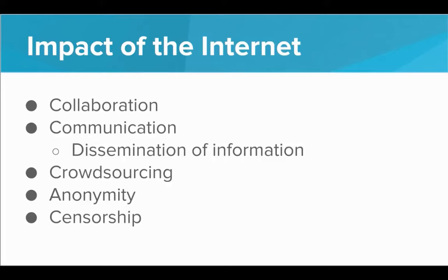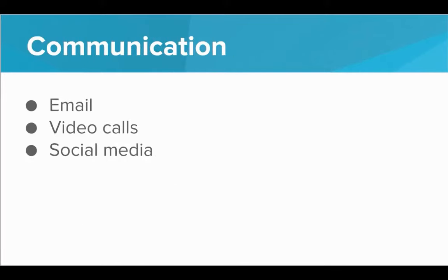But it also comes with some downsides — there are interesting legal and ethical concerns around anonymity on the Internet, as well as censorship, which we'll get into later. How exactly has the Internet affected communication? Email, video calls, and social media are just a few examples. Email has enabled instant communication that postal mail never could achieve. Video calls enable us to interact face-to-face with people from different countries and keep in touch with friends and family overseas. Social media has transformed how we consume news and stay up-to-date with the lives of friends and family.